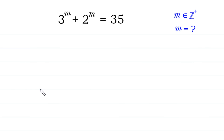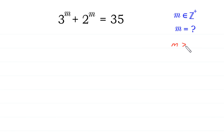Welcome to how to solve this very nice exponential equation: 3 to the power m plus 2 to the power m is equal to 35, and we need to find the value of m, where m is a positive integer, meaning m is greater than 0.